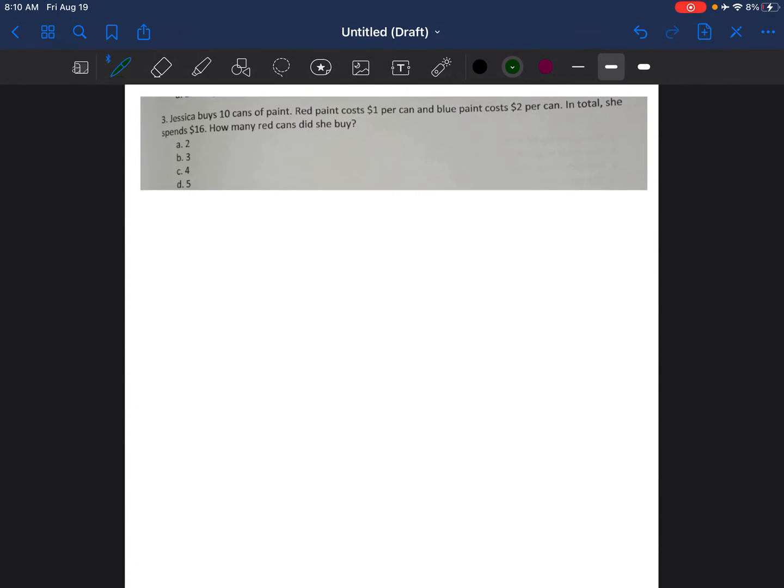And this is question number 3. Question number 3 says, Jessica buys 10 cans of paint. Red paint costs $1 per can and blue paint costs $2 per can. I'm going to stop there because I know that I'm dealing with two different variables. I'm dealing with red paint, so I'm going to label that R. And then I'm also dealing with blue paint, and I'm just going to label that B. So red paint, there's a total of 10 cans of paint. I buy red cans of paint plus blue cans of paint, and the total number of paint cans will be 10.